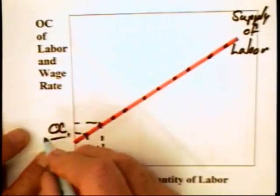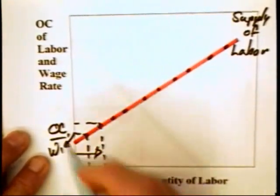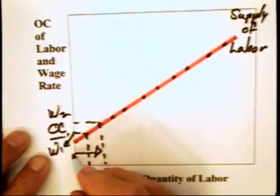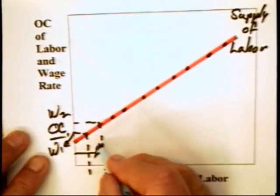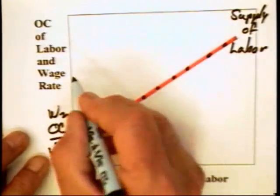We must raise the wage from, say, W1, which is here, to W2, which is here, because we're going to be pulling in workers who have successively higher opportunity costs.